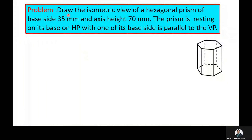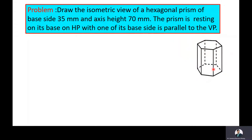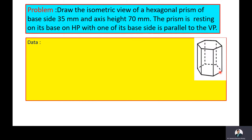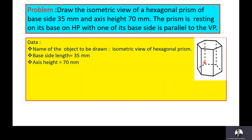The given problem is: draw the isometric view of a hexagonal prism of base side 35 mm and axis height 70 mm. The prism is resting on its base on HP with one of its base sides parallel to VP. The base side length is 35 mm, axis height is 70 mm, and the prism rests on its base on HP with one base side parallel to VP.